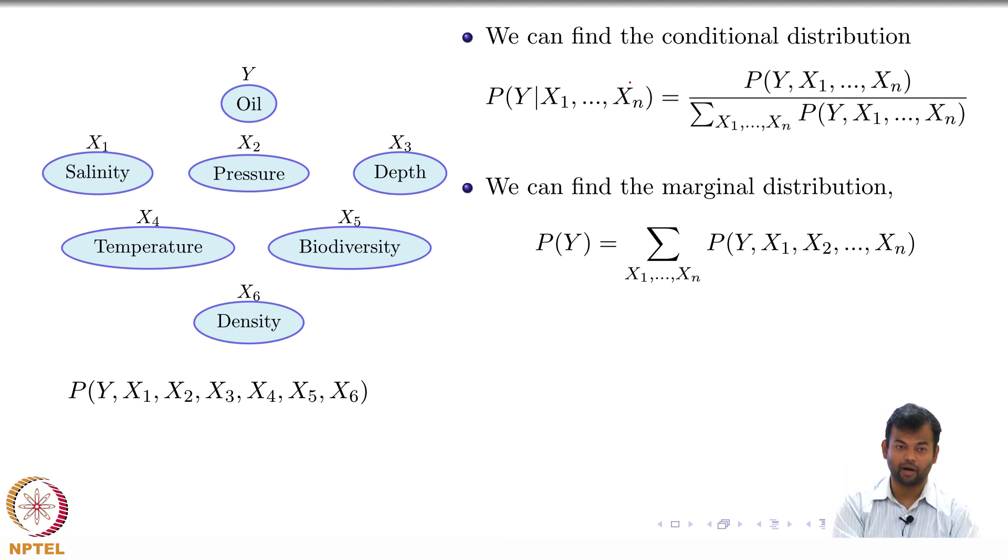We can also find the marginal distributions. I would want to know what is the biodiversity generally across the ocean or what is the temperature and so on and I would want a distribution for that.